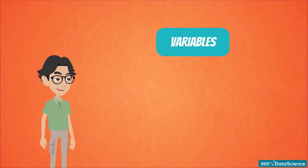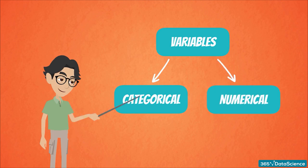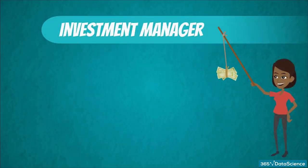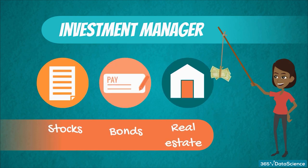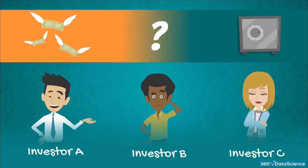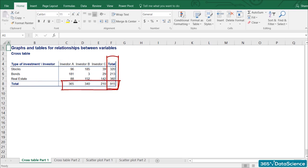Once again, we have a division between categorical and numerical variables. The most common way to represent categorical variables together is using cross tables, or as some statisticians call them, contingency tables. Imagine you are an investment manager and you manage stocks, bonds, and real estate investments for three different investors. Each of them has a different idea of risk, and hence their money is allocated differently among the three asset classes. A cross table clearly shows the rows with the type of investment and columns with each investor's allocation. It is good practice to calculate the totals of each row and column.